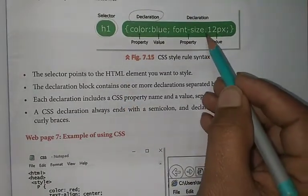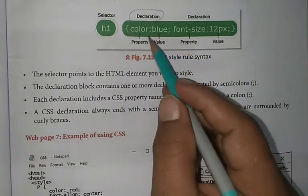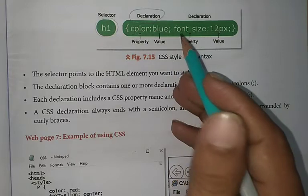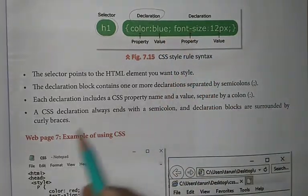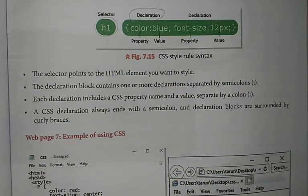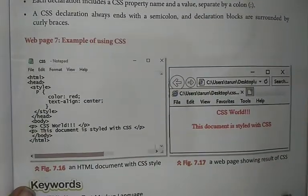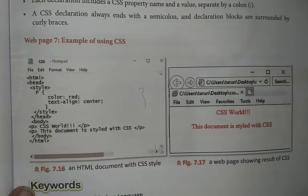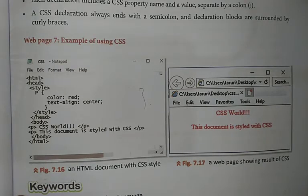So the colon is used to define values and the semicolon separates properties. Through this we can build the complete CSS code. Now your chapter is finished — thanks.